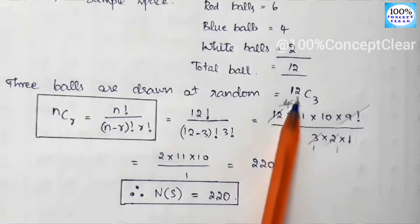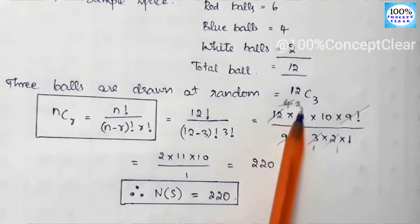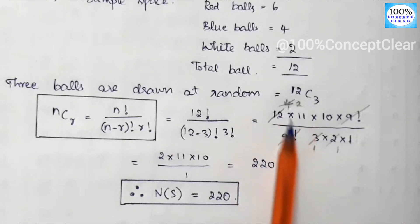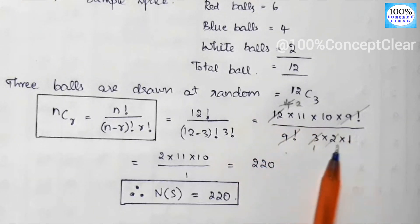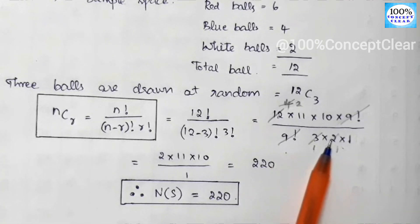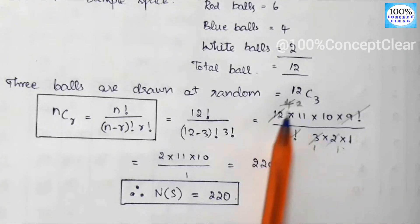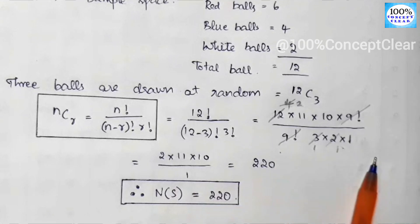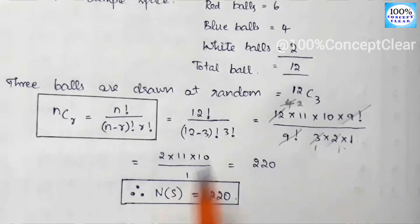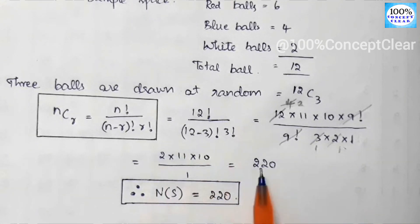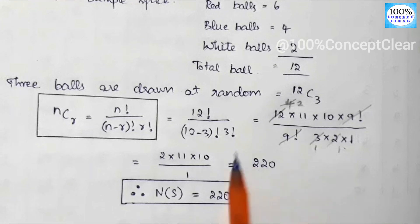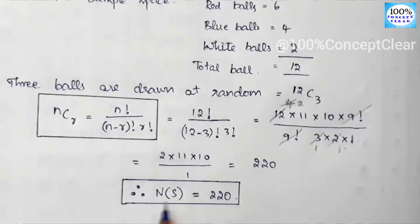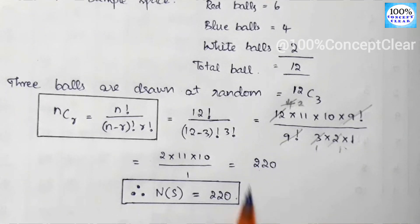After cancellation, we multiply 2 into 11 into 10, which equals 220. So the sample space n(S) = 220.